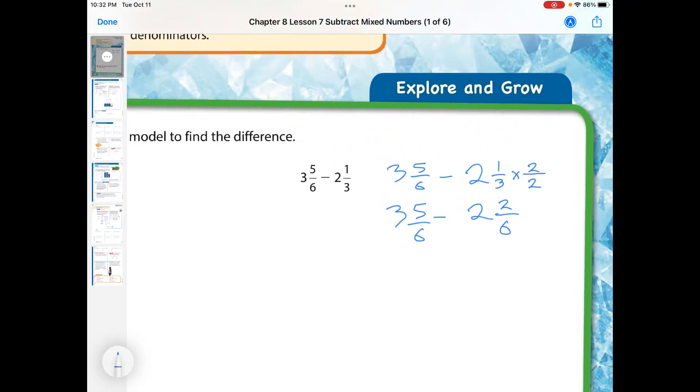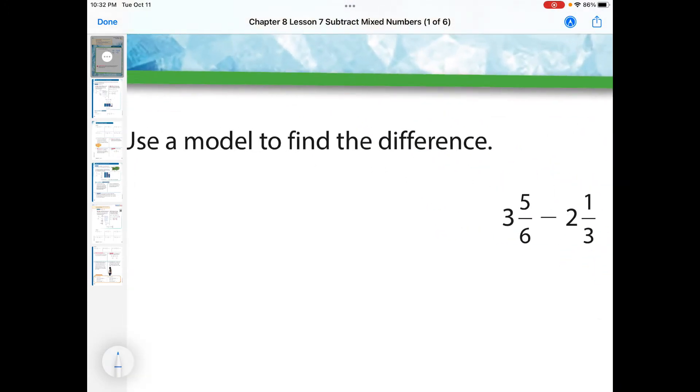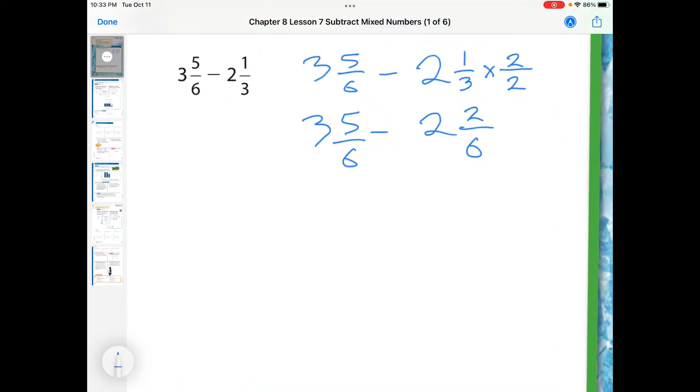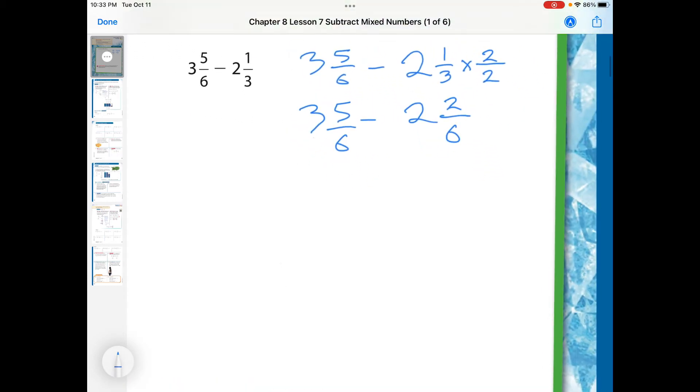Now, the directions told us to use a model, so we're going to use a model. So let's come over here and let's start with 3 and 5 sixths. So I have three holes, 1, 2, 3, and then here comes our 5 sixths. And because our denominators are the same, I can go ahead and just put 3 on that side, 3 on that side. And you'll notice that I have 1, 2, 3, 4, 5, 6.